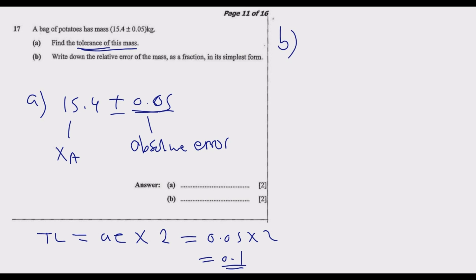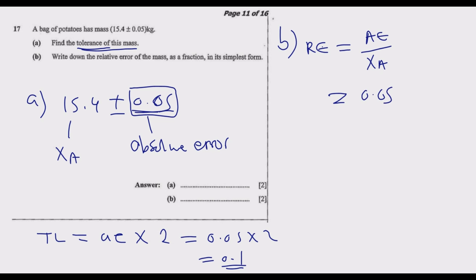Part b asks us to write down the relative error of this mass. The relative error equals the absolute error divided by the true measurement. So that is 0.05 divided by 15.4. Both values are to two decimal places, so to avoid complications with decimal places, we will multiply the fraction by a special form of 1.